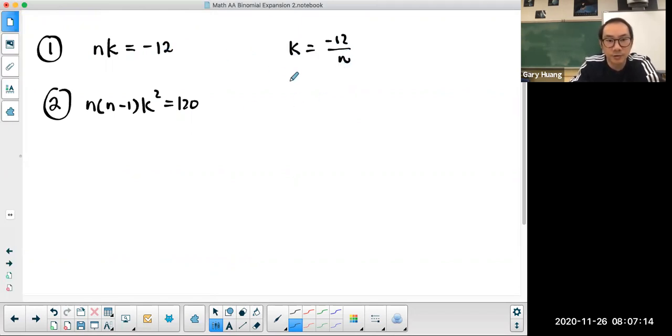And I'm going to substitute that into the second equation. So what I'm going to get is n times n minus 1 times k, which is negative 12 over n, squared, which is equal to 120.